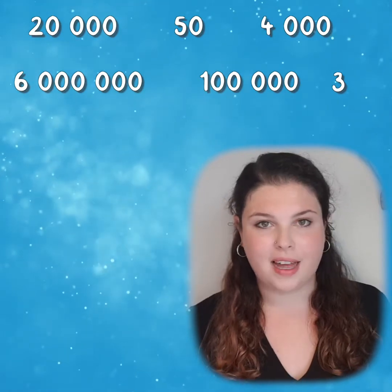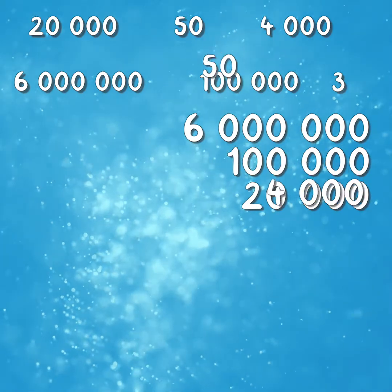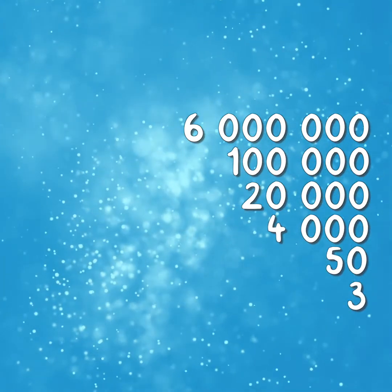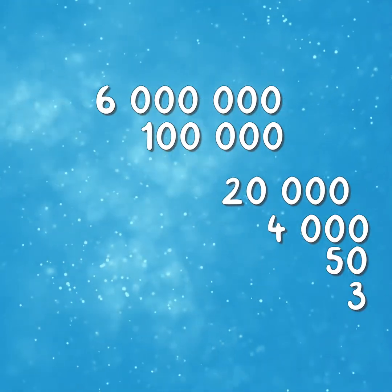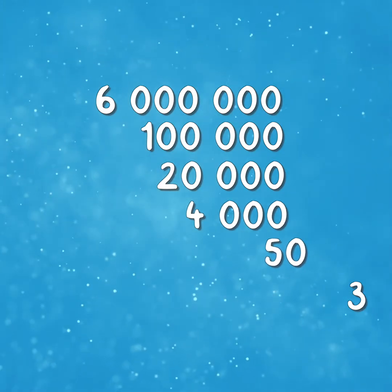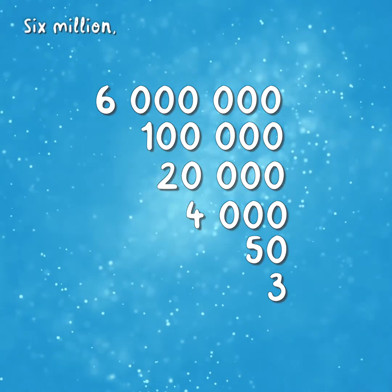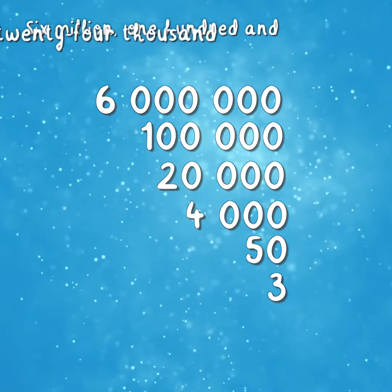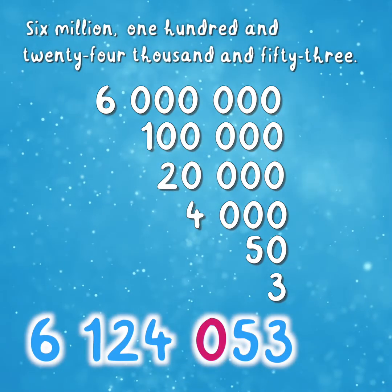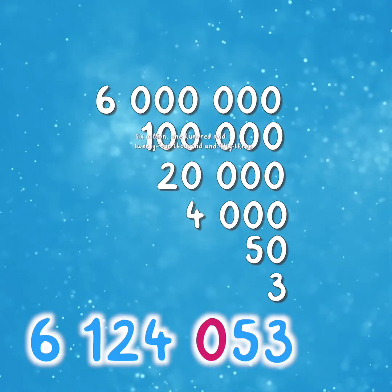Now let's put this partitioned number back together in digits and words. If we present the numbers as if we are doing column addition, then we can be sure that we are adding them up correctly: 6,000,000; 100,000; 20,000; 4,000; 50; and 3. So we have 6 million, 124,000, and 53. You'll notice that there is a 0 in the 100s column — that was there to trick you.